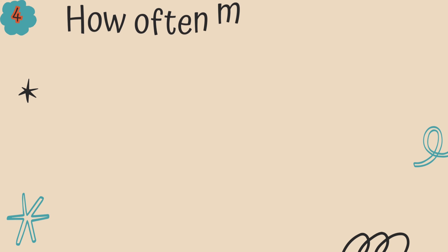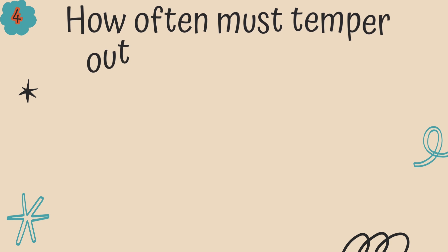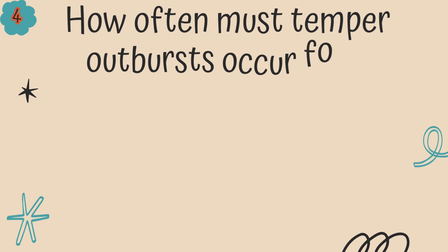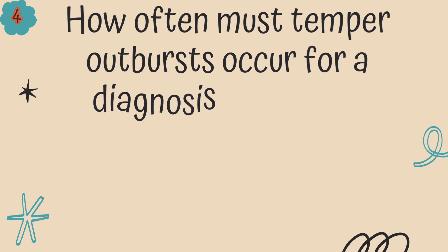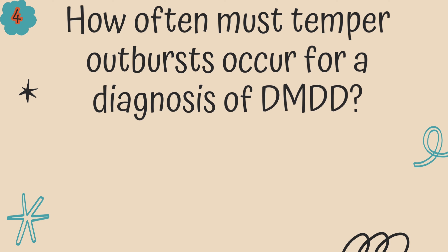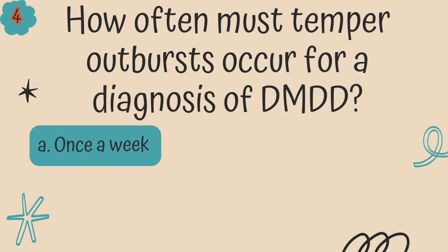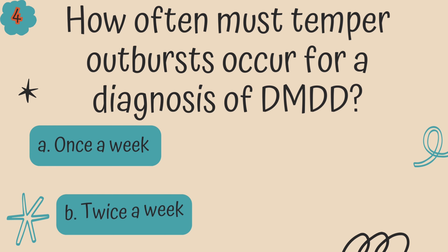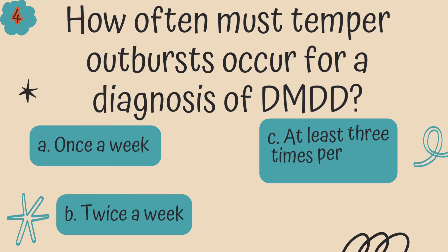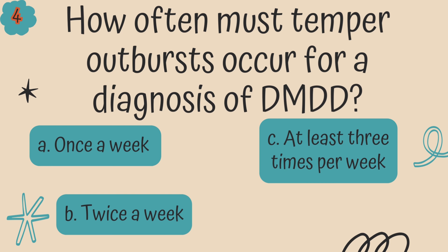Question 4. How often must temper outbursts occur for a diagnosis of DMDD? A. Once a week, B. Twice a week, C. At least three times per week, or D. Daily?